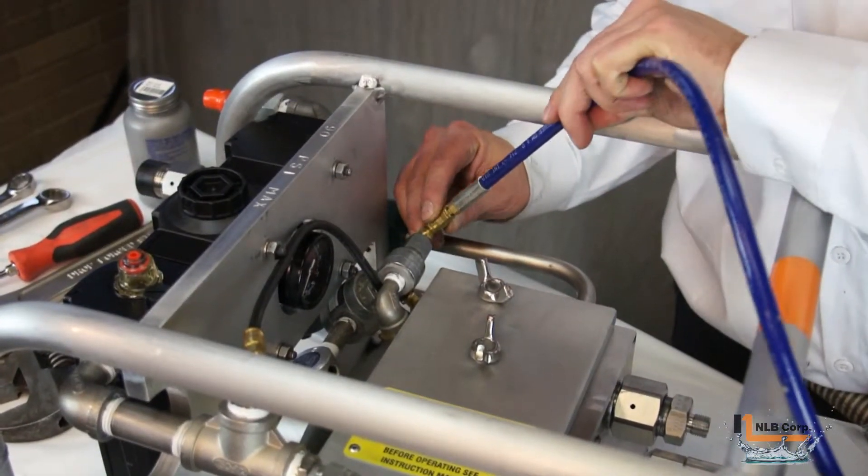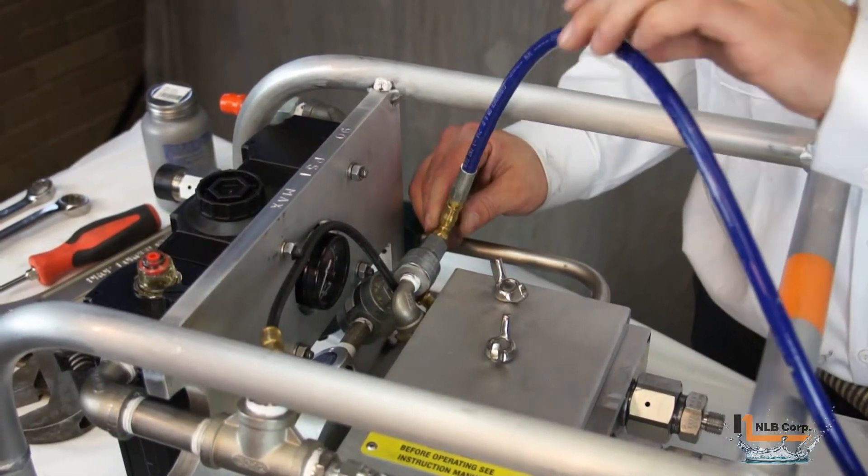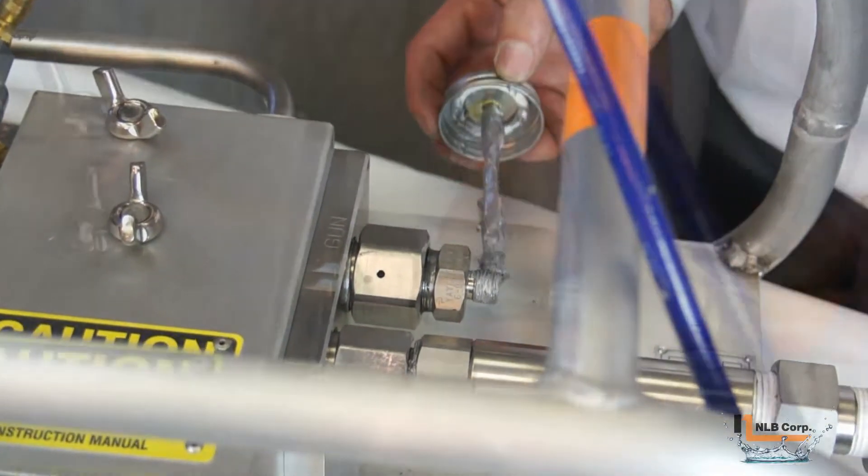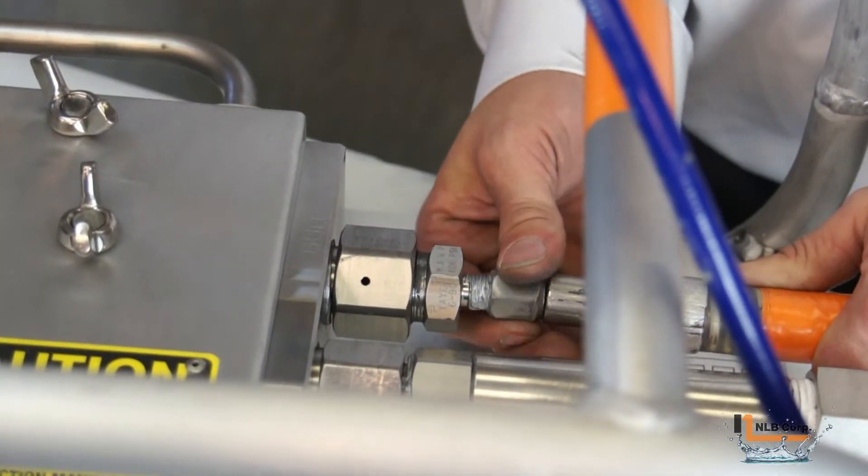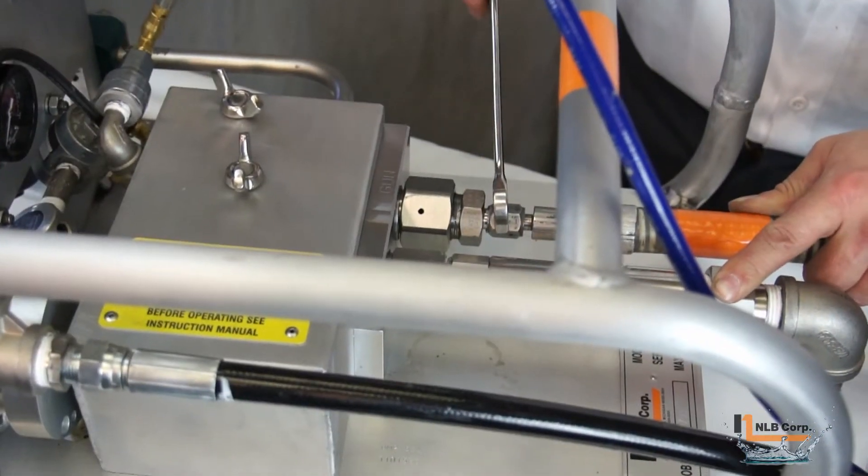Now, connect the blue air signal line to the bi-mode as shown. To connect the high pressure water supply line, first apply anti-seize to the threads and then screw the fitting on. Snug this connection with a wrench.